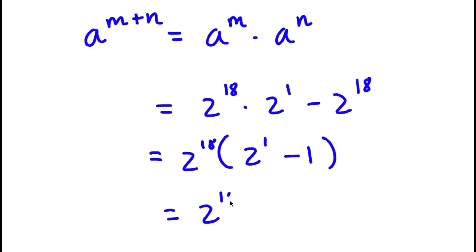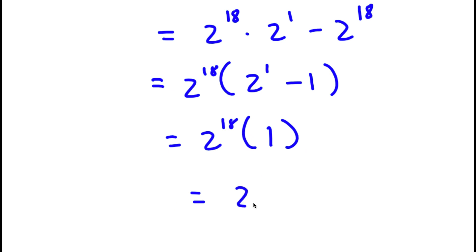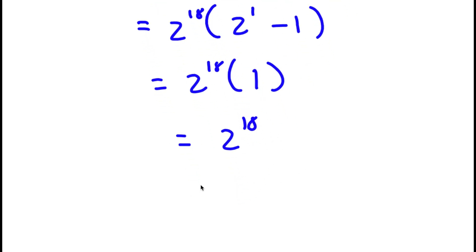This is the same thing as 2 to the power of 18 times (2 to the power of 1 is 2, 2 minus 1 is 1). So 2 to the power of 18 times 1, which is simply equal to 2 to the power of 18. Now I'm going to simplify this to get the exact value of 2 to the power of 18.